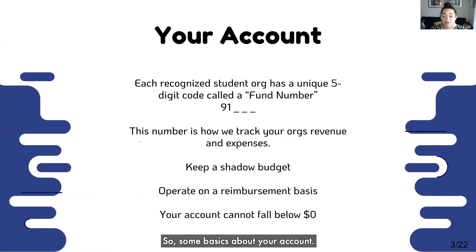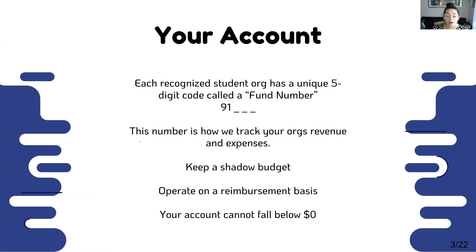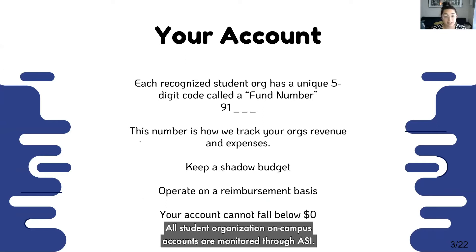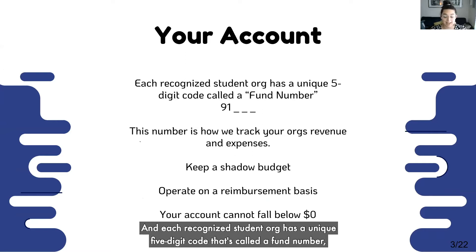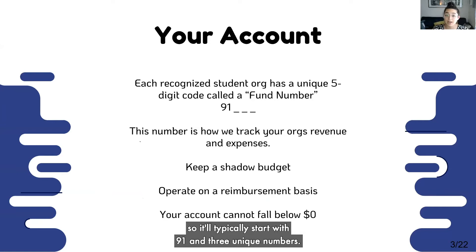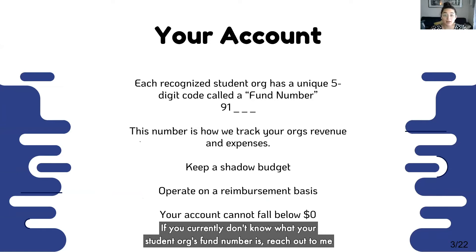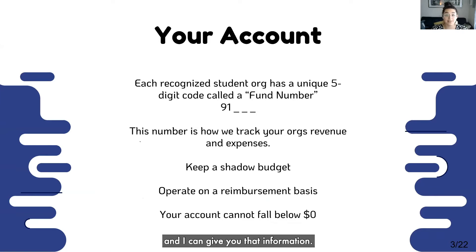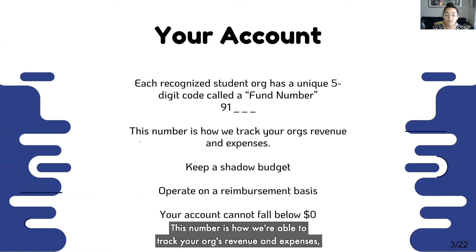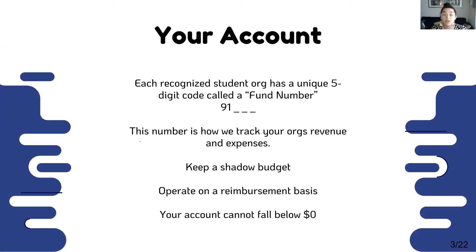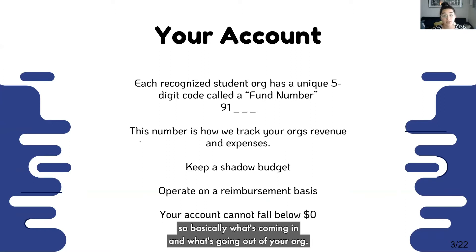Some basics about your account: all student organizations' on-campus accounts are monitored through ASI, and each recognized student org has a unique five-digit code called a fund number. It'll typically start with nine, one, and three unique numbers. If you currently don't know what your student org's fund number is, reach out to me and I can give you that information. This number is how we're able to track your org's revenue and expenses — basically what's coming in and what's going out of your org.